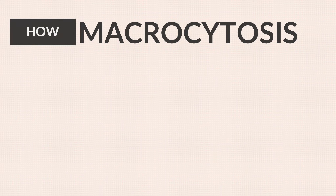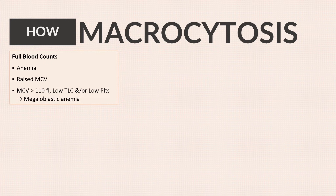How to investigate? Full blood counts may show anemia. If MCV is more than 110 femtoliters, and white cells and/or platelets are also low, megaloblastic anemia is the diagnosis unless proved otherwise. In such a scenario, test B12 and RBC folate levels.